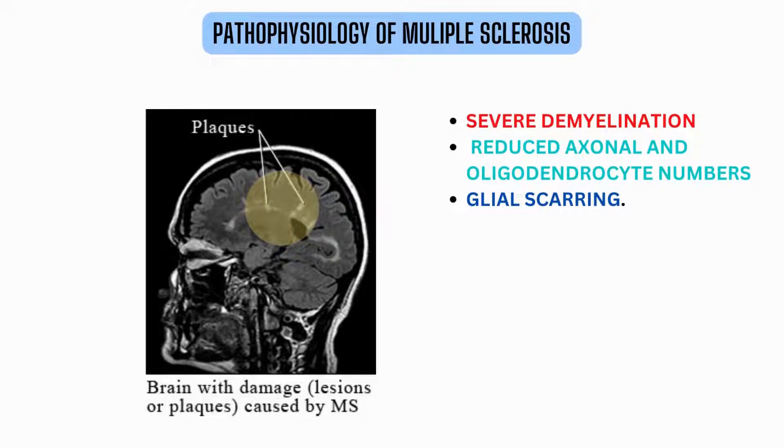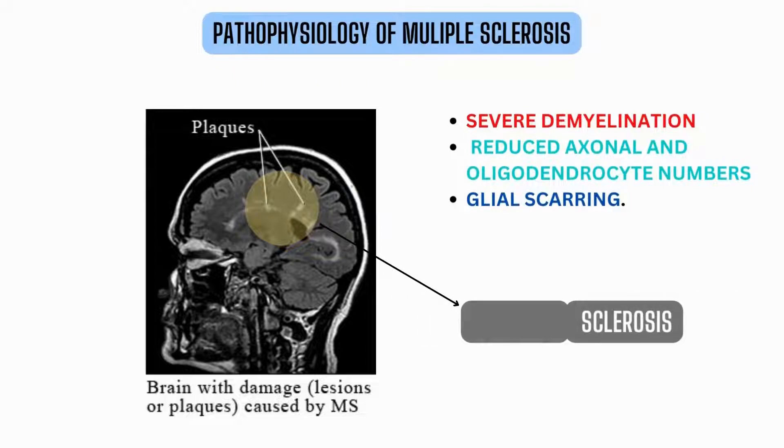On histologic examination, it shows up as indurated patches in pathologic specimens, so it's called sclerosis. Since the multiple patches, multiple sclerosis.